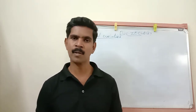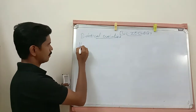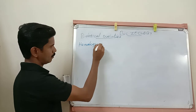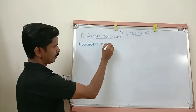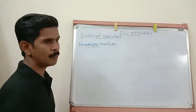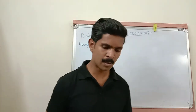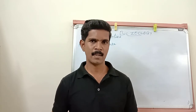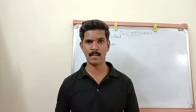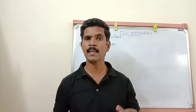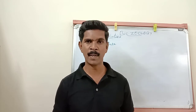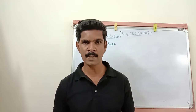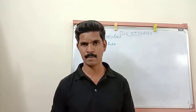The first three-mark question is homologous structure. Listen very carefully. Homologous structures are body parts of some organisms that are similar in their structure but perform different functions. This structure is called a homologous structure.